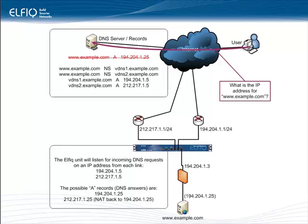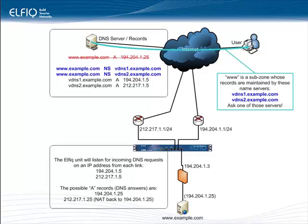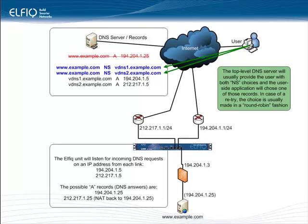Now that we understand the setup, let's see what happens when that same user requests an IP address for www.example.com. The hosted DNS service will not have any A record — instead, they will have a subzone for www. So they will say: www is a subzone whose records are maintained by these nameservers — vdns1.example.com or vdns2.example.com. The user will be asked to make their DNS request to vdns1 or vdns2. Note that the top-level DNS server will usually provide the user with both NS choices, and the user's application will choose one of those records.